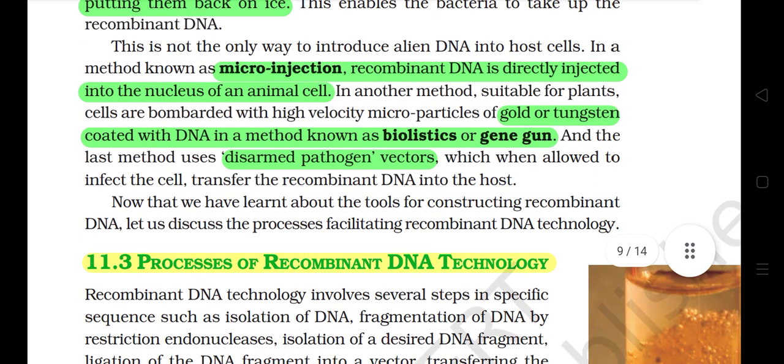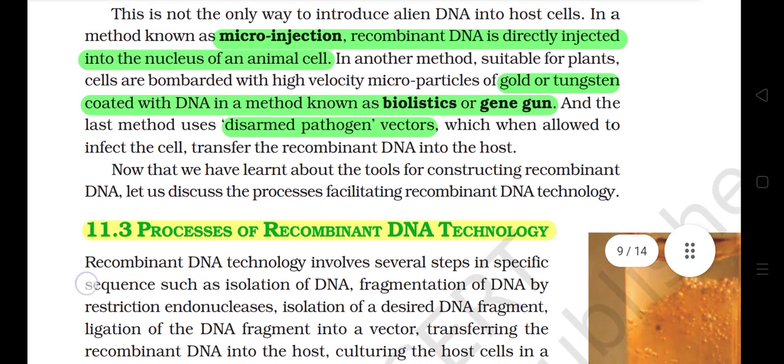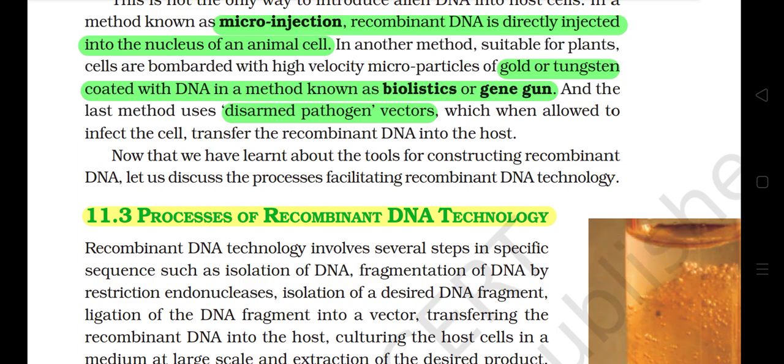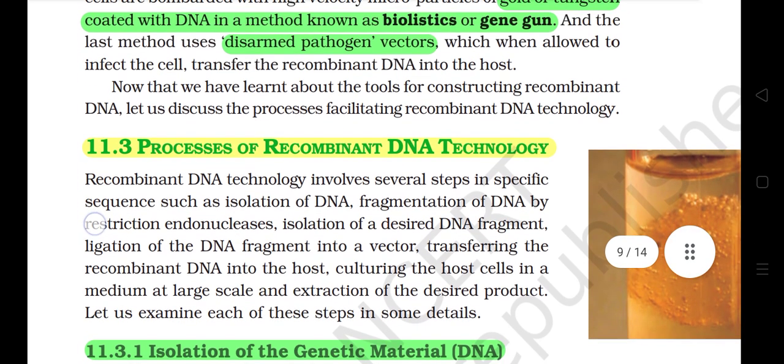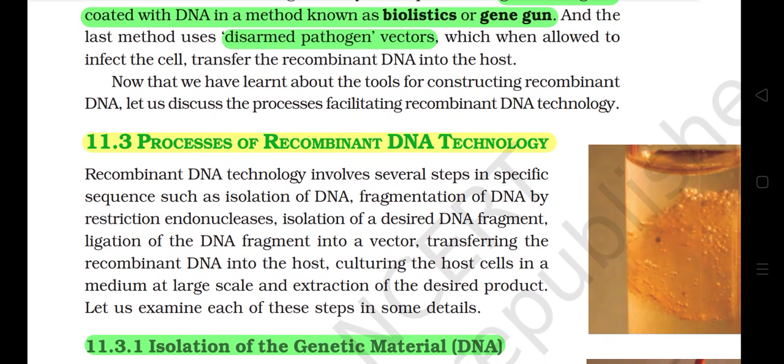This is not the only way to introduce alien DNA into host cells. In a method known as microinjection, recombinant DNA is directly injected into the nucleus of an animal cell. In another method suitable for plants, cells are bombarded with high-velocity microparticles of gold or tungsten coated with DNA — a method known as biolistics or gene gun. The last method uses disarmed pathogen vectors which, when allowed to infect the cell, transfer the recombinant DNA into the host.